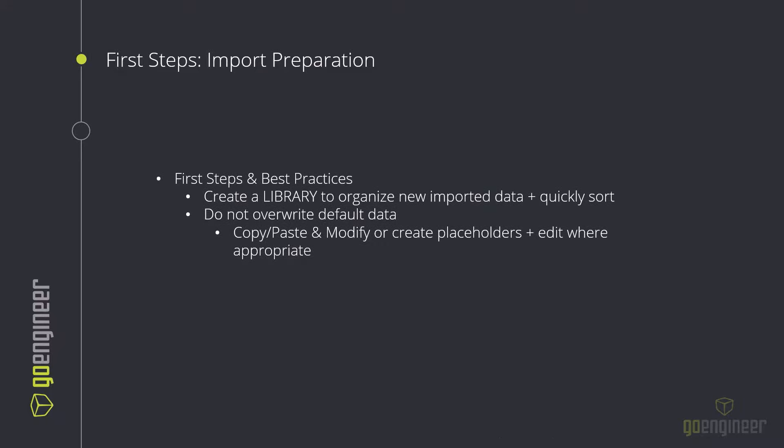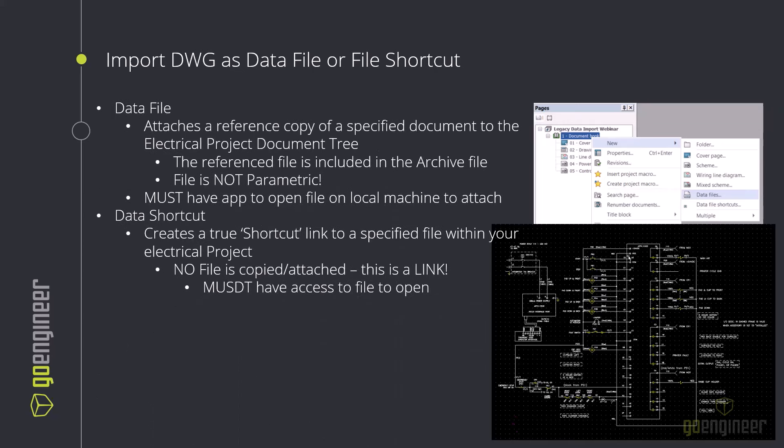The first thing we'll look at is importing a DWG as a data file or a file shortcut. A data file attaches a reference copy of a specified document to the electrical project document tree. When you archive your project, that file is extracted out and included within the archive — so it copies it at the moment you attach it and also loads it into the archive you send to other users. One caveat: you need an application on your machine capable of opening that file type.